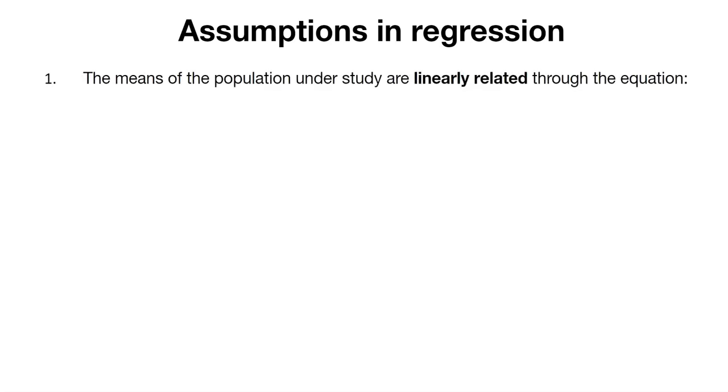The first assumption says that the means of the population under our study are linearly related through an equation. And that equation looks like this. This is really the equation for a simple linear regression.